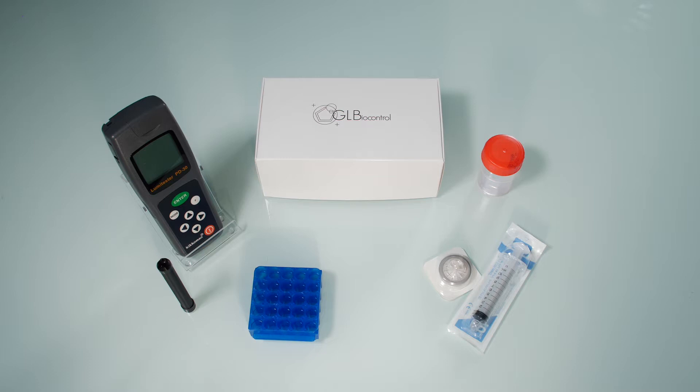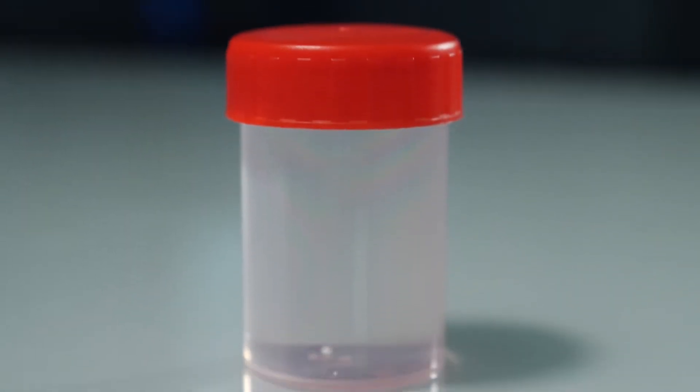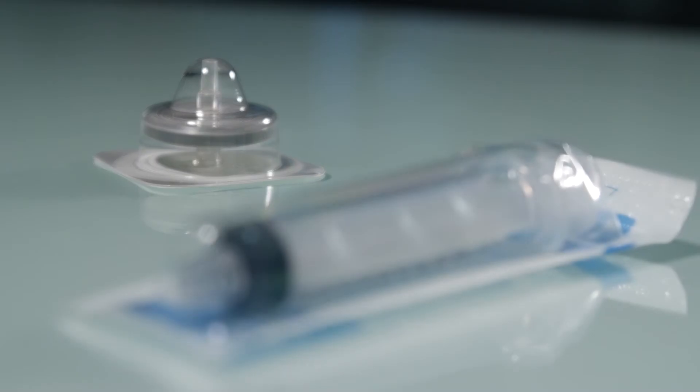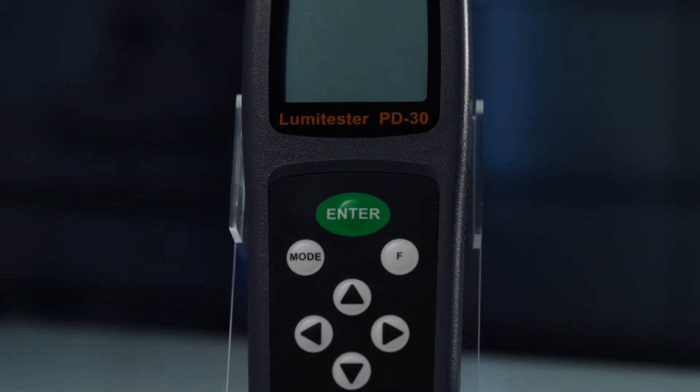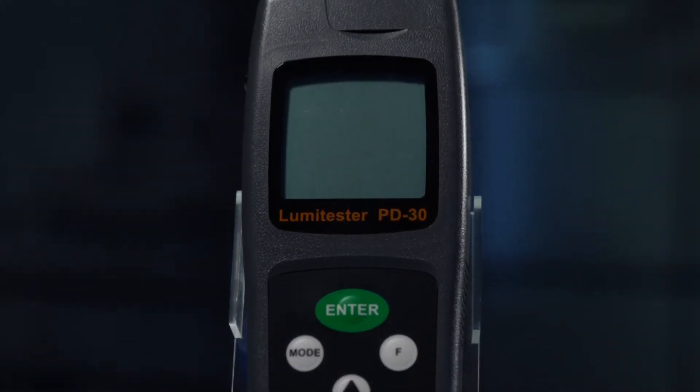To carry out the measurement you first need to set up the red capped container with your sample water, the filter, the syringe, the measurement device, also called a luminometer or ATP meter.